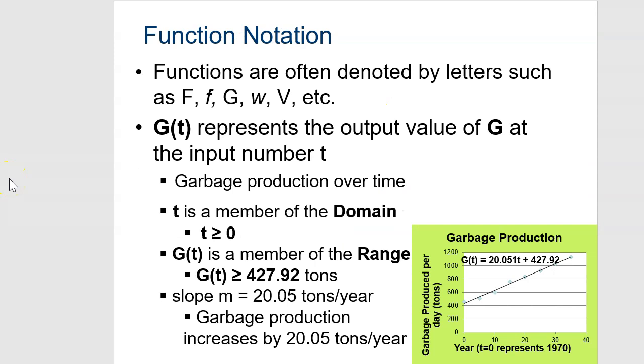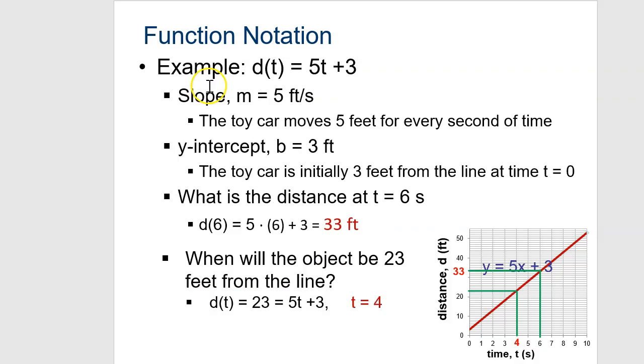And then it talks about function notation. So here we have g as a function of t, and you can use any kind of letters that you need to in here. In this case, it's garbage production over time, or as a function of time. And in this case, the x-axis is our domain, and that's the number of years. And g is the rate of garbage produced in tons per day. And then you can see we have a y equals mx plus b equation here that describes the best fit line. So if the function notation is distance as a function of time, where the slope of 5 times the x value plus the y-intercept would tell you what the y value is.